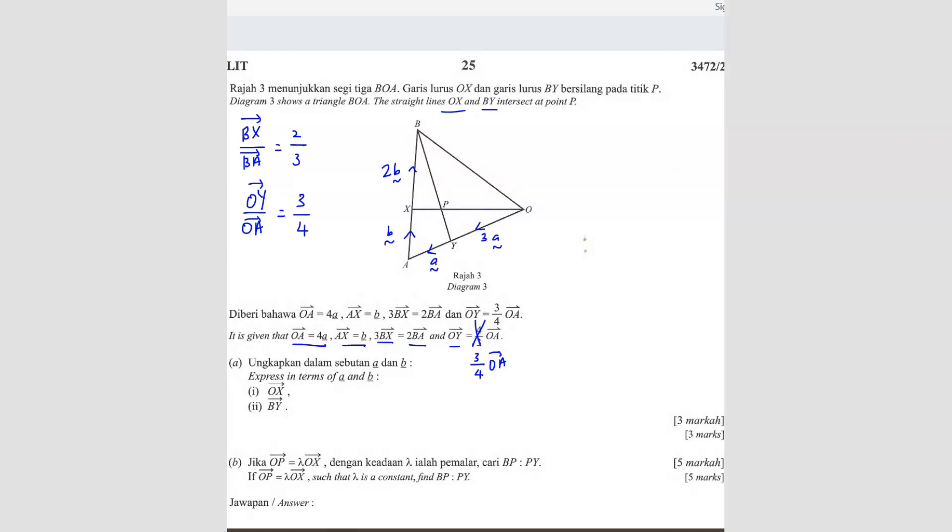You have already formed your all your vectors. Now, question A. They ask you to find OX. Where is OX? OX will be OA plus AX. So OA is going to be 4A. Plus AX is B. So this is your answer.